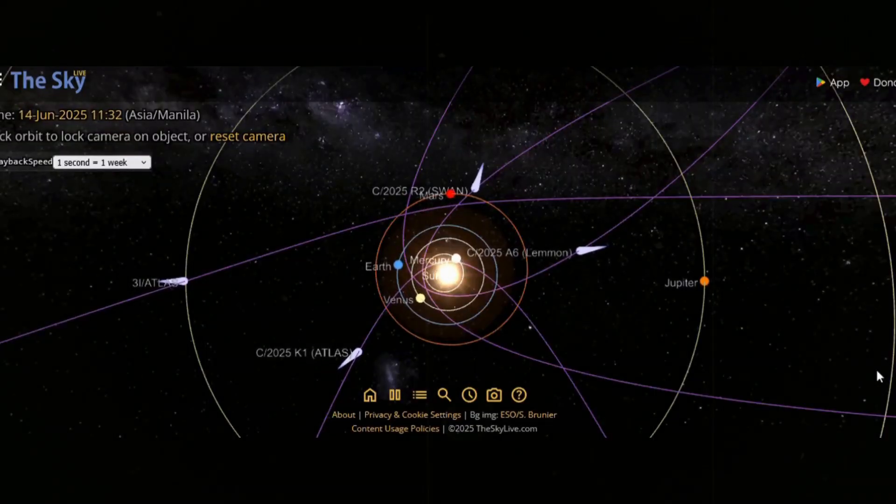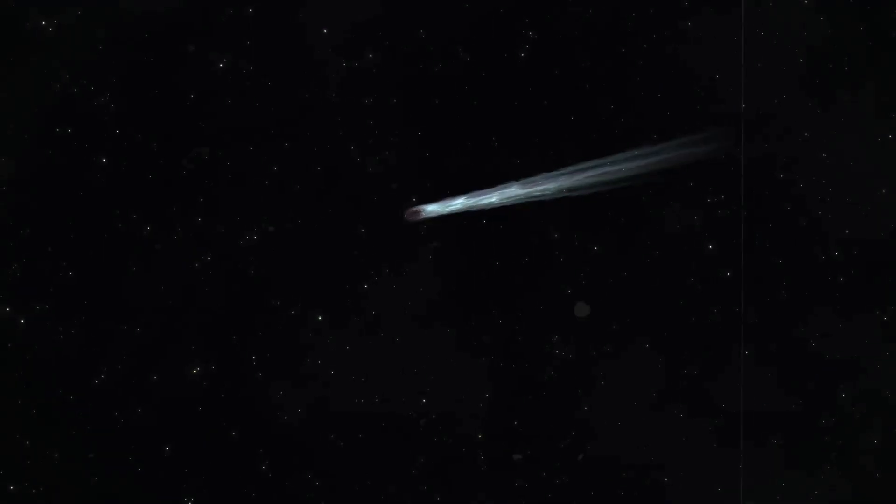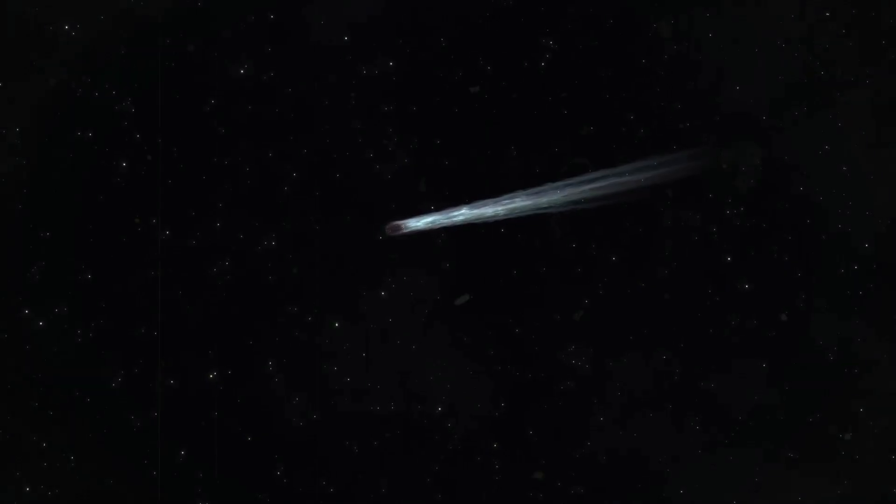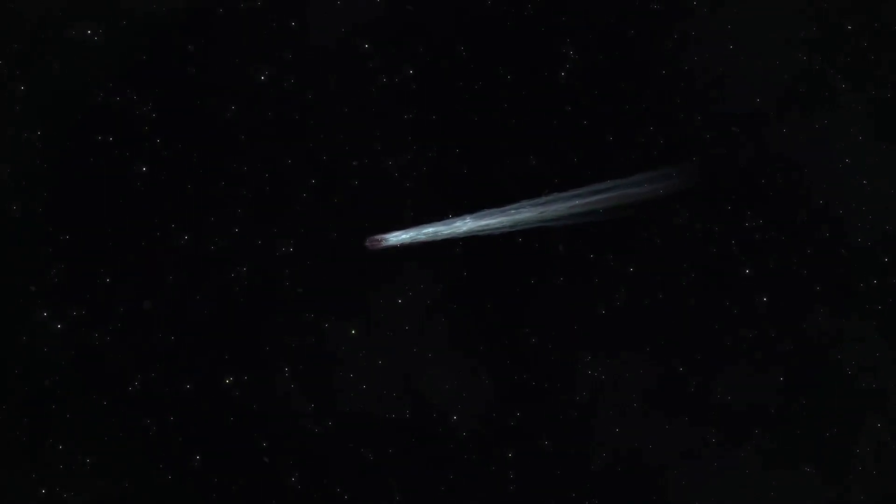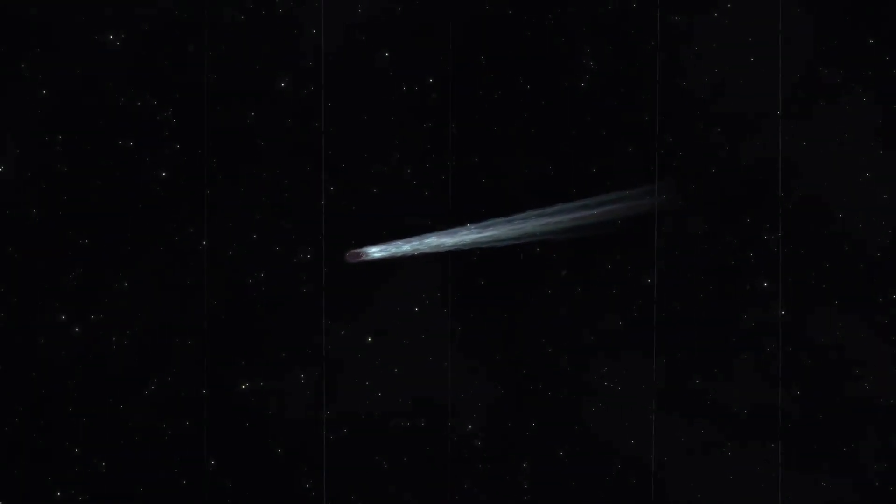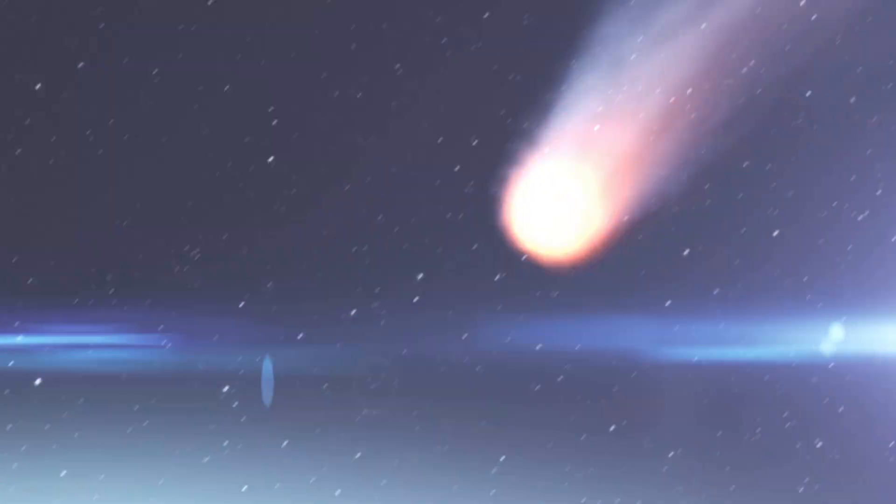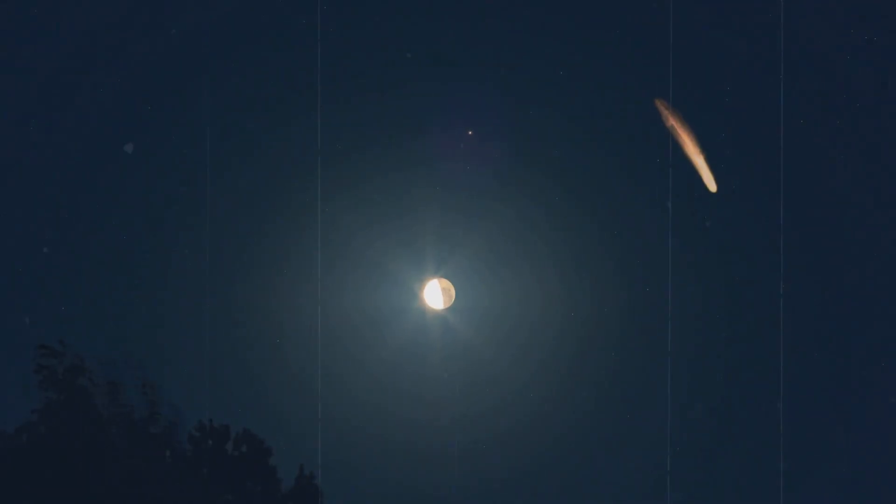Rarely in modern memory has Earth witnessed so many at once. Each carries a tail stretching millions of kilometers, a veil of gas and plasma that interacts with the sun in ways still only dimly understood. Why now? Why altogether? And what hidden message do these cosmic trespassers bring with them?